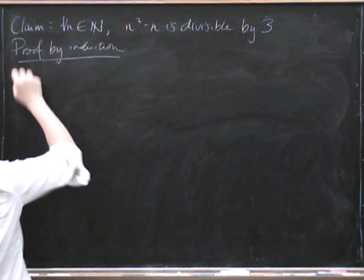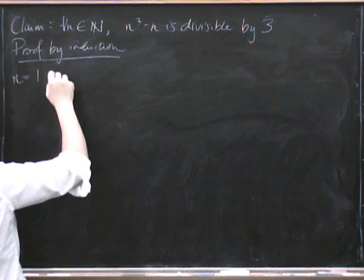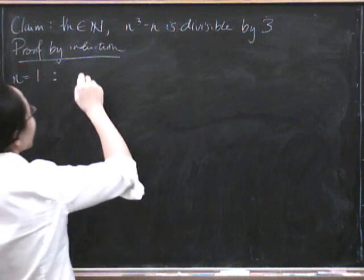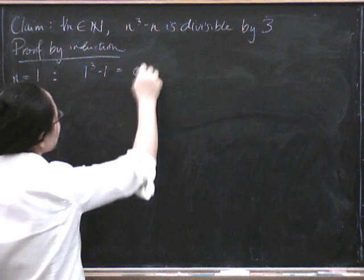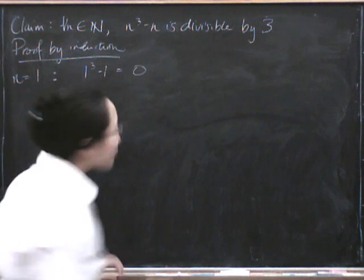As usual, the first step is to check n equals 1. So let's have a look. We get 1 cubed minus 1 which equals 0. 0 is definitely divisible by 3.